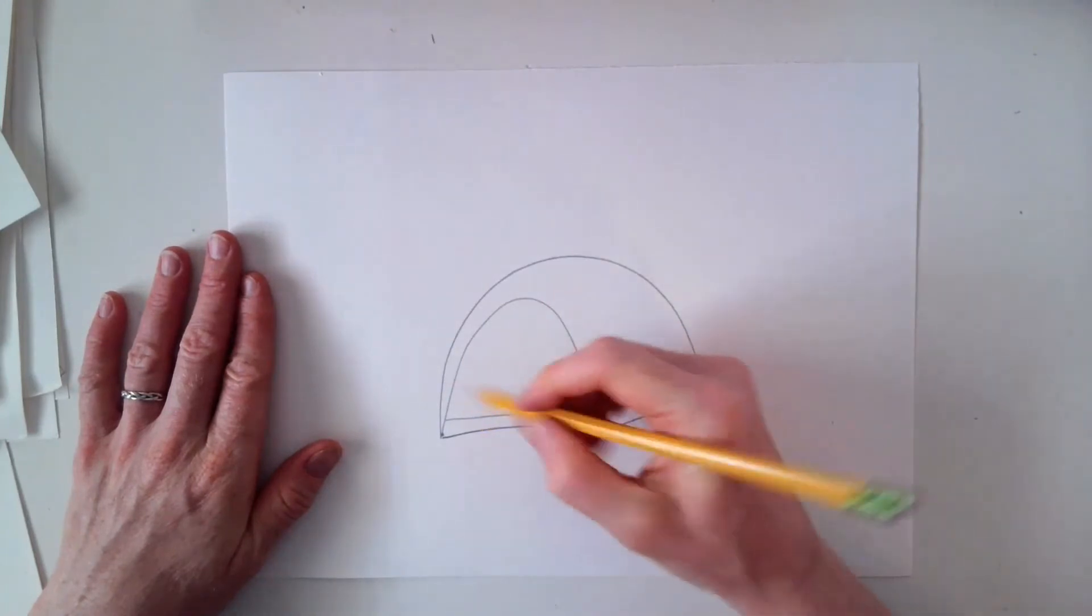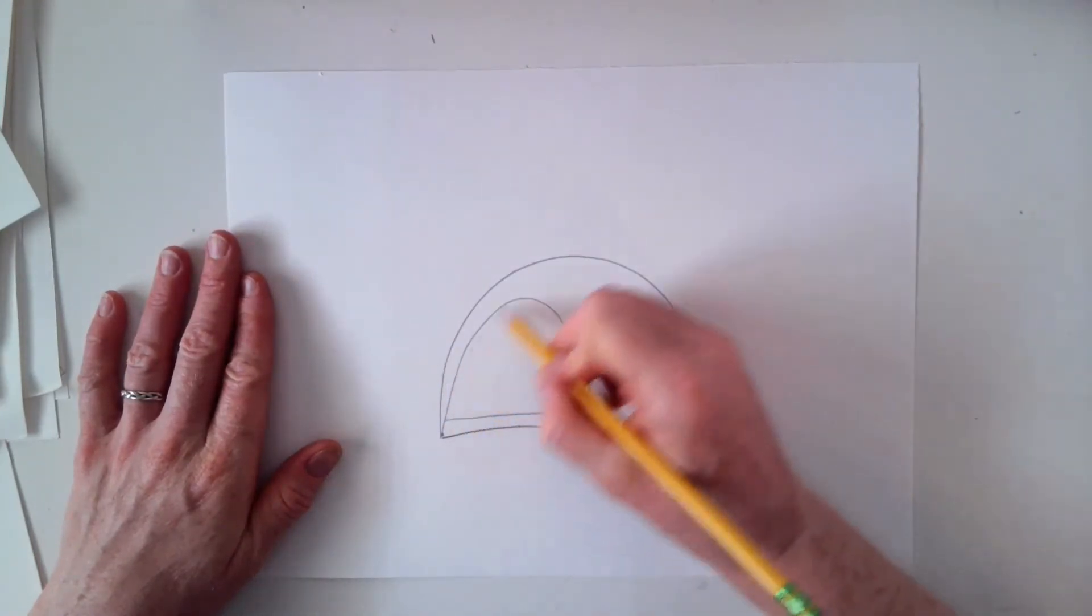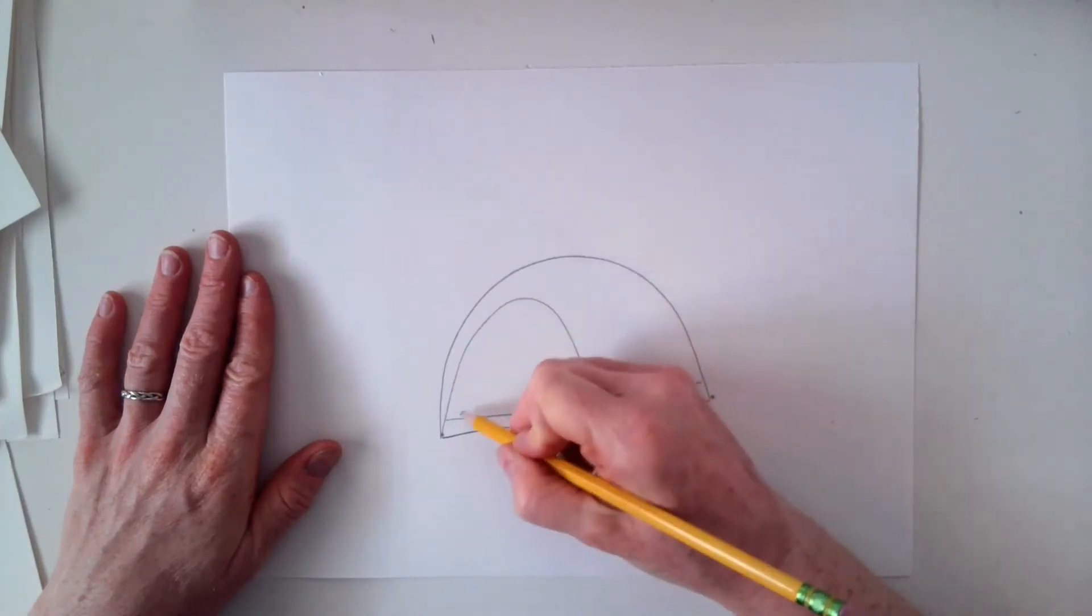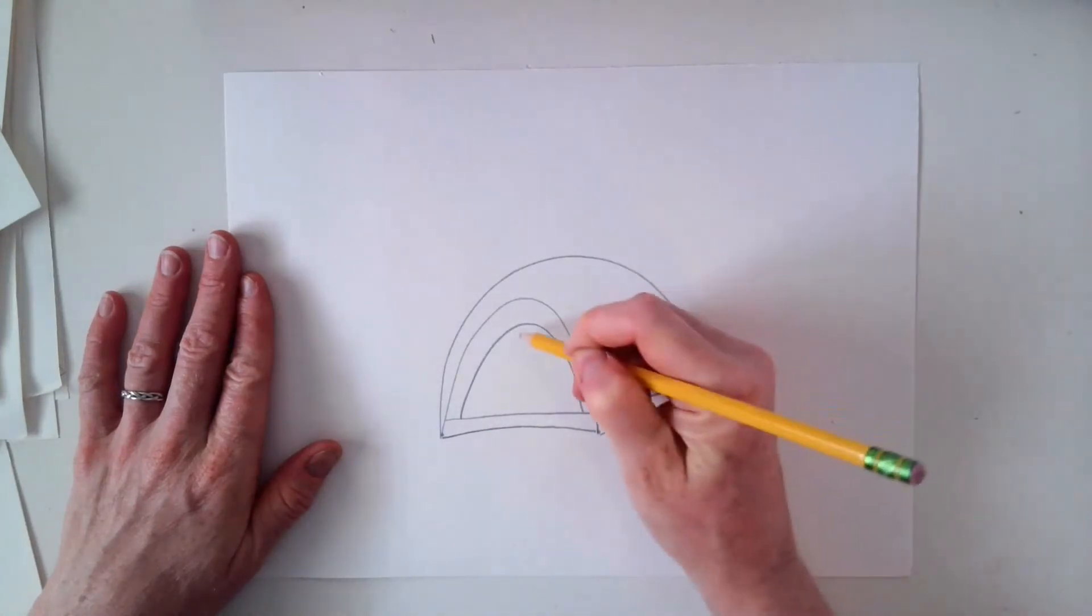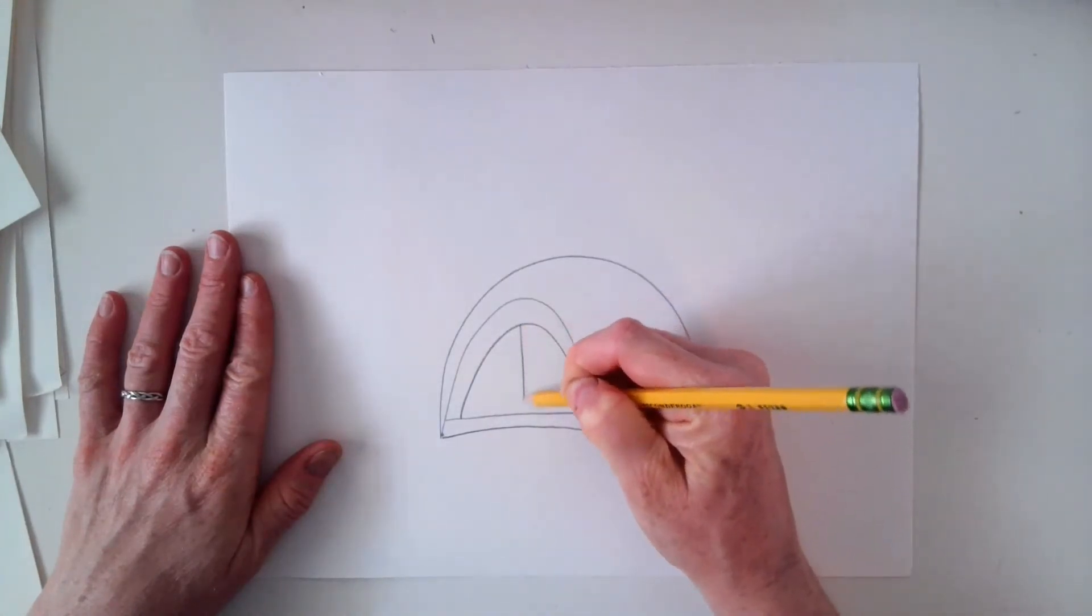Now let's draw the opening, where the zipper goes. Following the same curve as this, just slightly smaller, we'll make a curve like this, and then draw a line down the center.